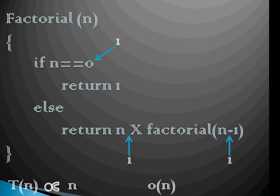we simply return 1, else we make a recursive call to calculate factorial of n minus 1, multiply it with n, and return the output.